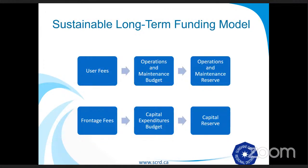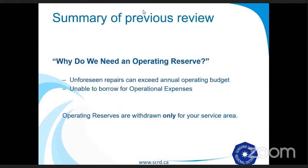What we have now is a more sustainable long-term funding model where user fees are used only for operations and maintenance and contribute to the operations and maintenance reserve, and frontage fees are only for capital expenditures and contribute to the capital reserve. A common question we received previously was: why do we need an operating reserve? Due to the nature of financing within a regional district, we're unable to borrow for operational expenses, and unforeseen repairs can exceed the annual operating budget. So it's important we have funds in place to do the work we need to do so the service can continue. It is important to note that operating reserves are withdrawn only for your service area and only for operating expenses.